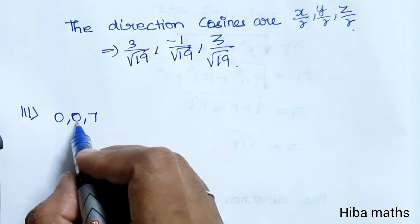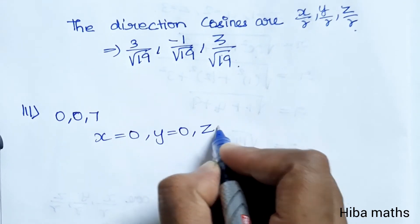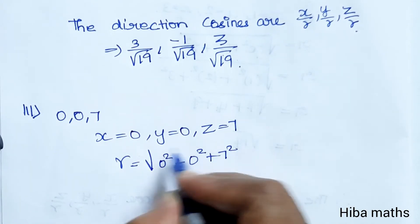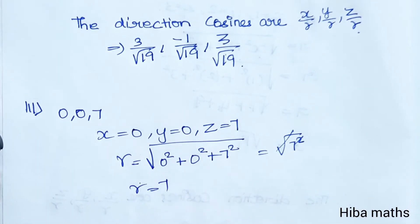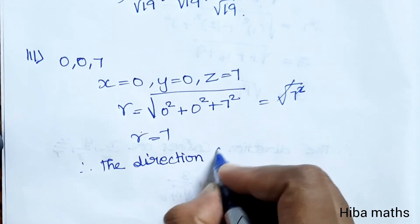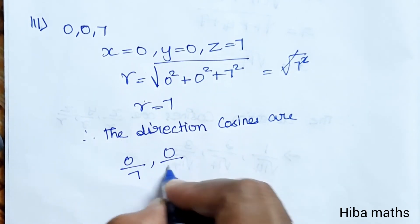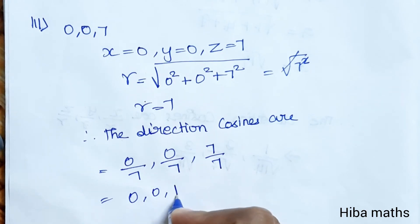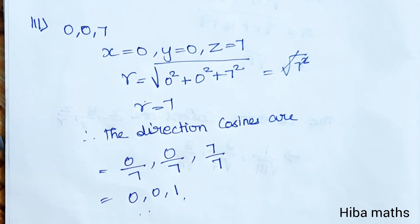Last subdivision, the third one: direction ratios are 0, 0, 7 — an easy question. X value is 0, Y value is 0, and Z value is 7. R equals root of 0 square plus 0 square plus 7 square, so root of 49, giving R equals 7. Therefore the direction cosines are 0 by 7, 0 by 7, and 7 by 7, which simplifies to 0, 0, 1.